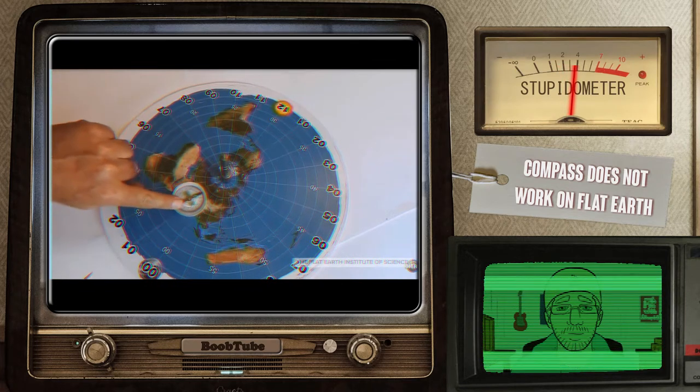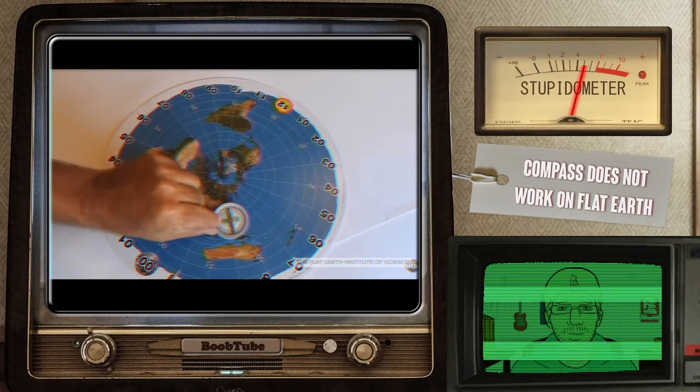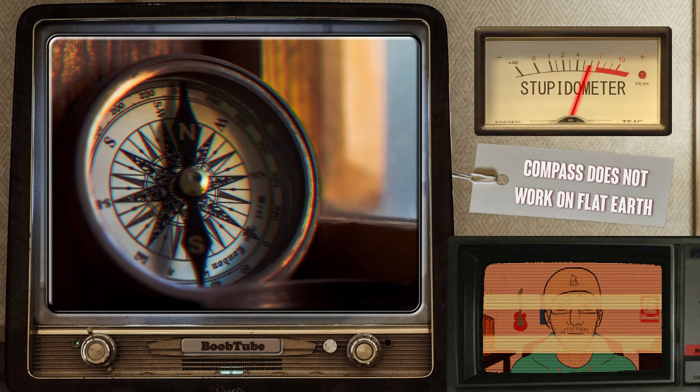Here we have David Weiss moving a compass around the flat earth, with his compass continually pointing at his north magnetic pole. Stop laughing, guys.